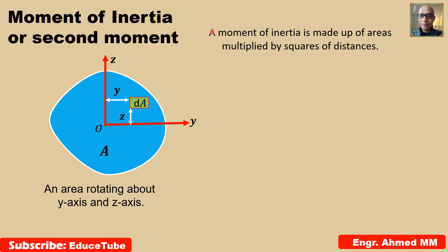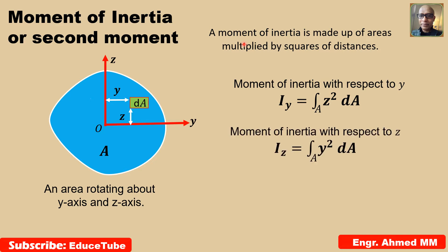I have written a moment of inertia is made up of areas multiplied by squares of distances. So if we want to find Iy, we need integral, Iy equal to z squared dA. Or if we want to find moment of inertia with respect to z, we need integral Iz equal to y squared dA.